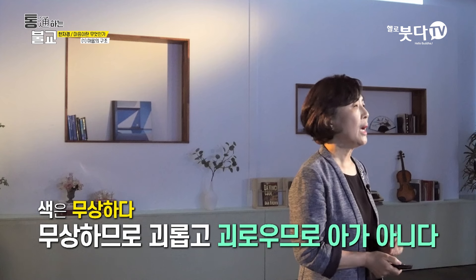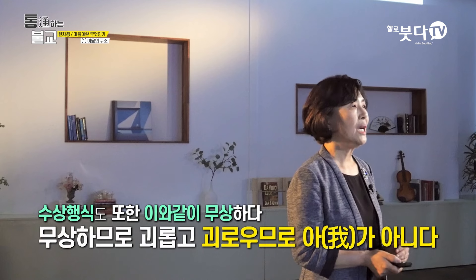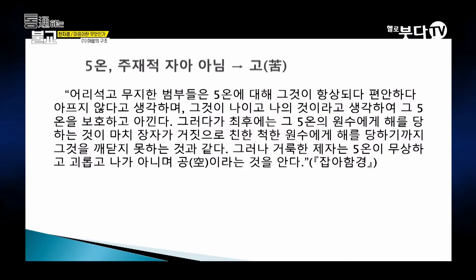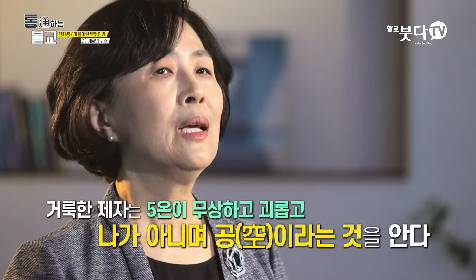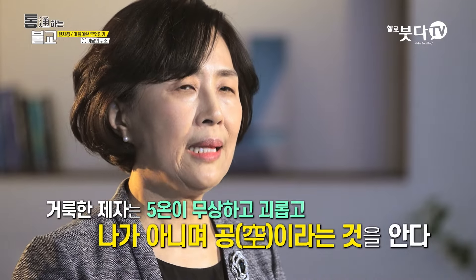초기경전 잡아함경에 보면 '색은 무상하다. 무상함으로 괴롭고 괴로움으로 아(我)가 아니다. 수상행식도 또한 이와 같다'라고 이야기하죠. 심신이 상일한 자아가 아니라는 것을 깨달아서 거기에 집착하지 말라는 뜻이죠. 또 잡아함경에 '어리석고 무지한 범부들은 오온에 대해서 그것이 항상되다, 편안하다, 아프지 않다고 생각하여 그것이 나이고 나의 것이라고 생각하여 그 오온을 보호하고 아낀다. 그러다가 최후에는 그 오온의 원수에게 해를 당하는 것이 마치 장자가 거짓으로 친한 척한 원수에게 해를 당하기까지 그것을 깨닫지 못하는 것과 같다'라고 이야기합니다.